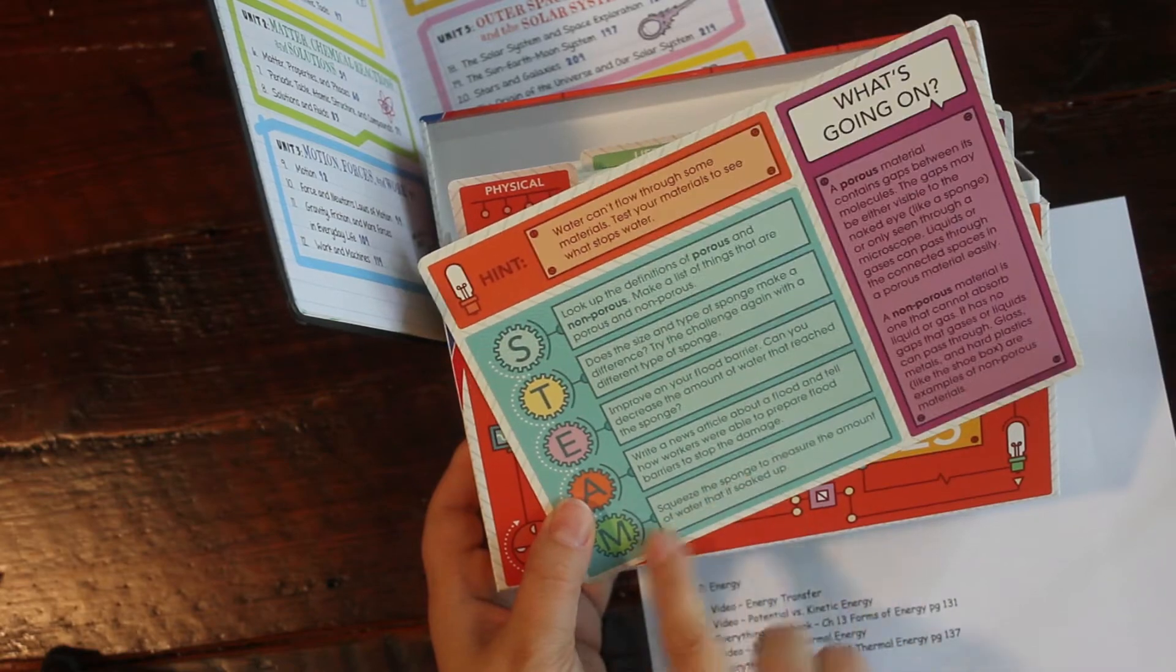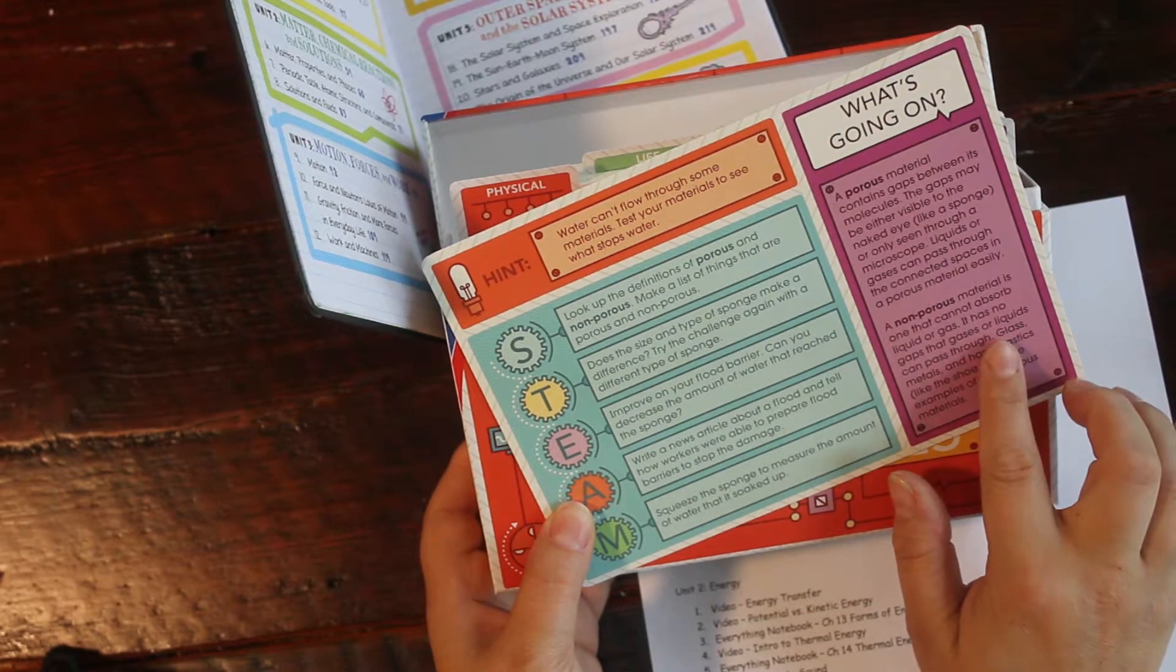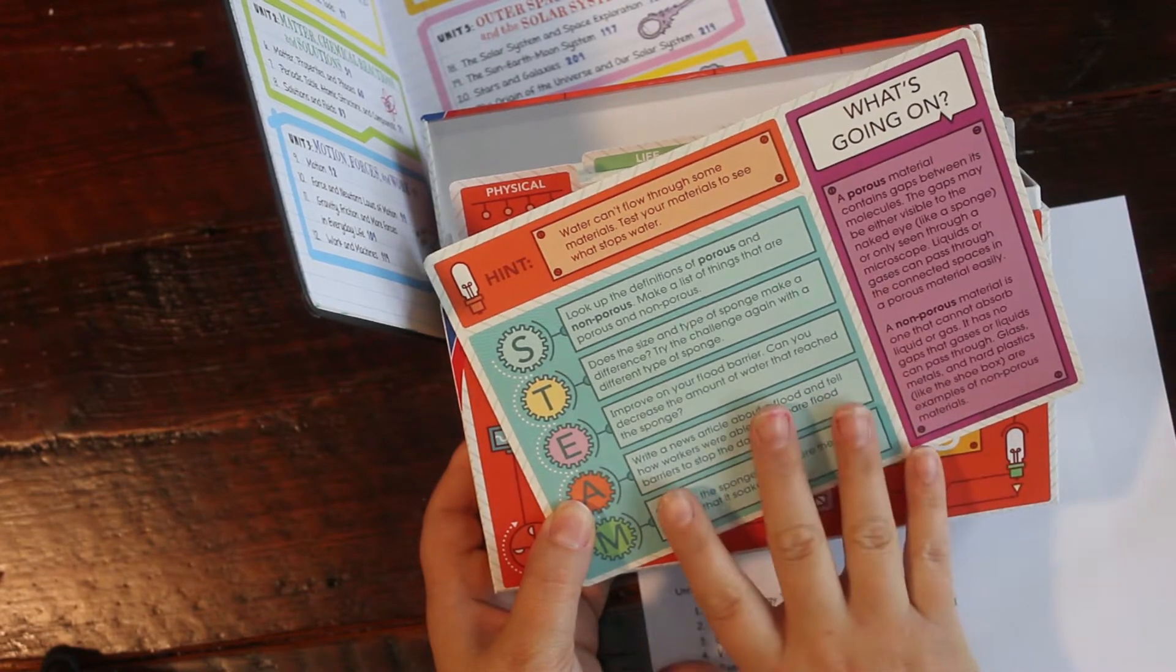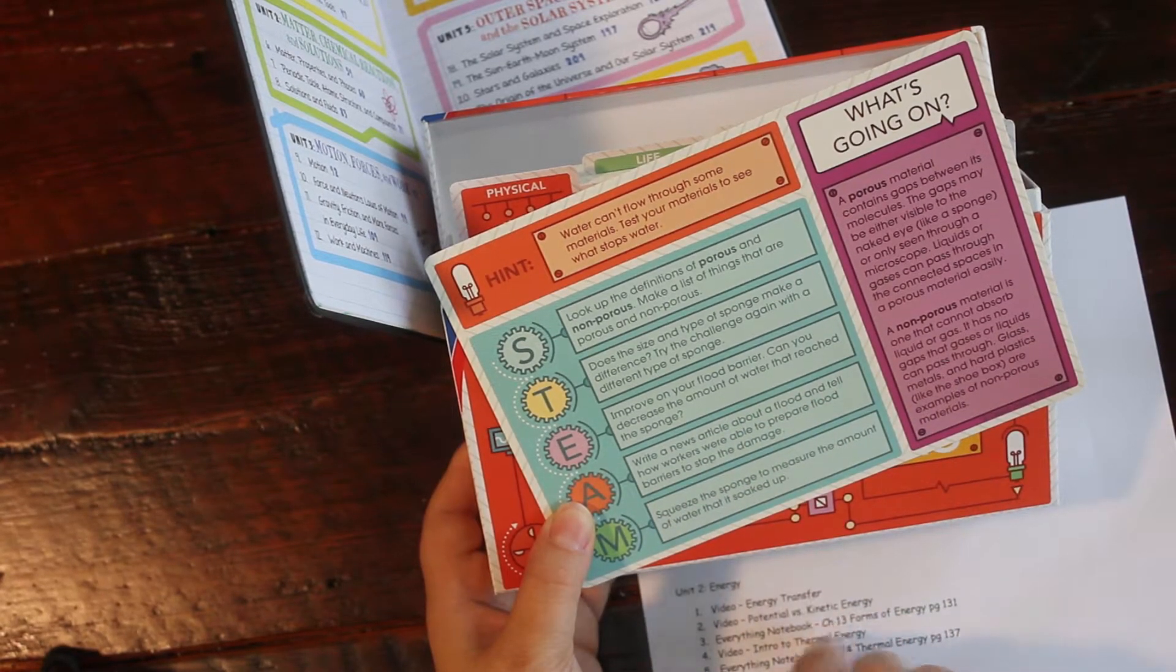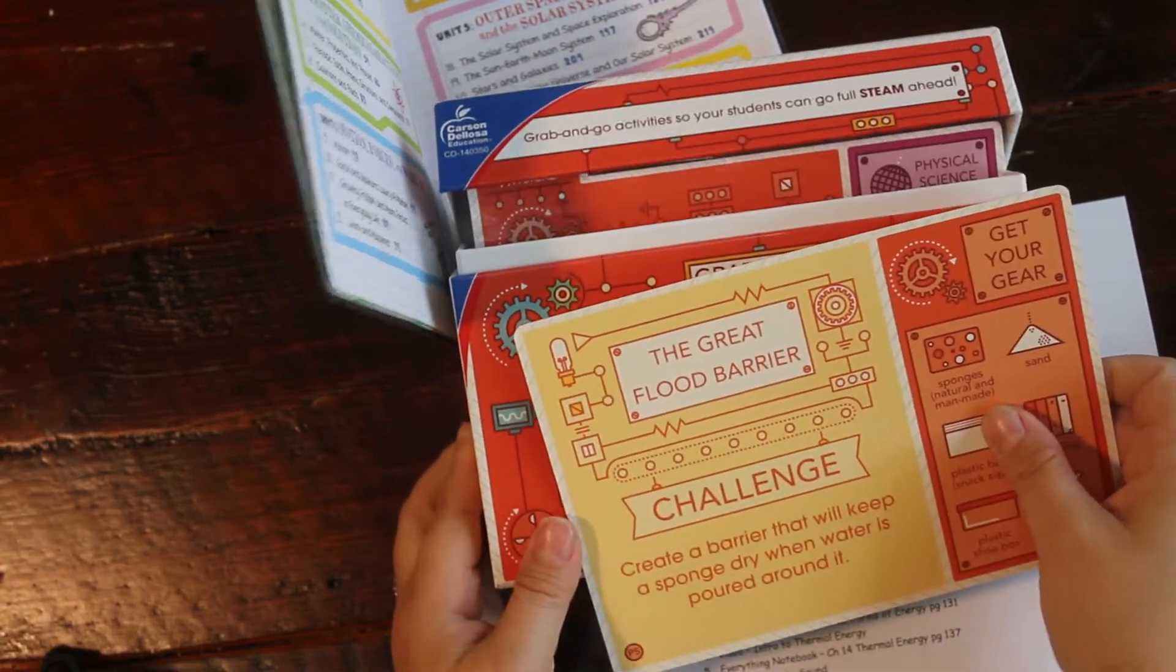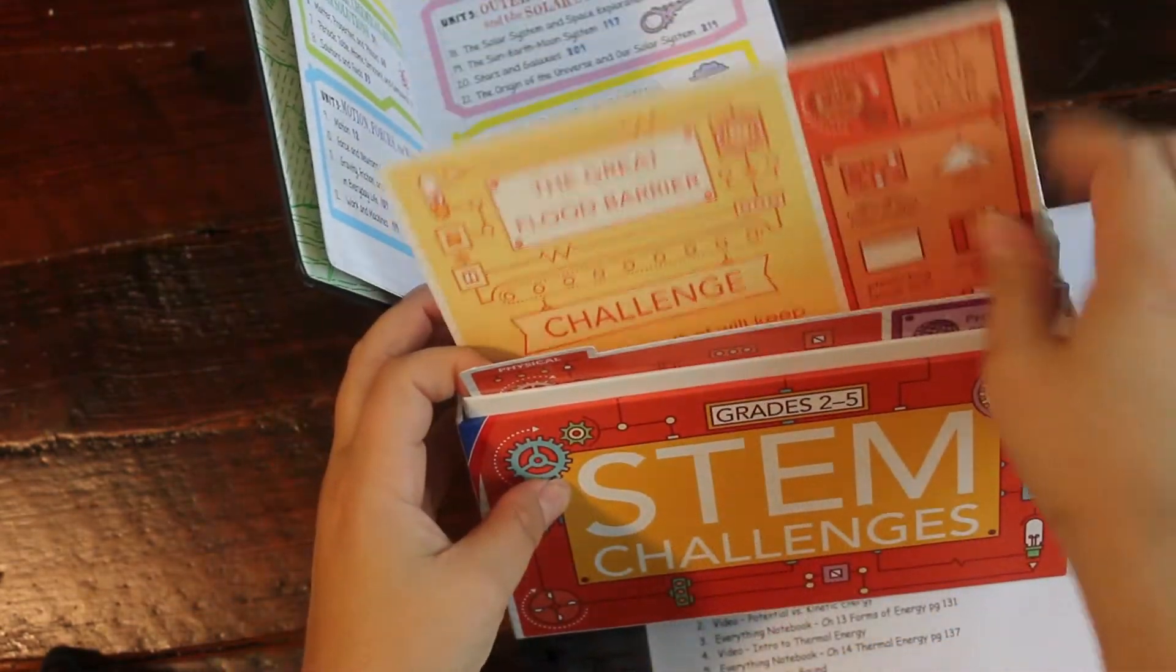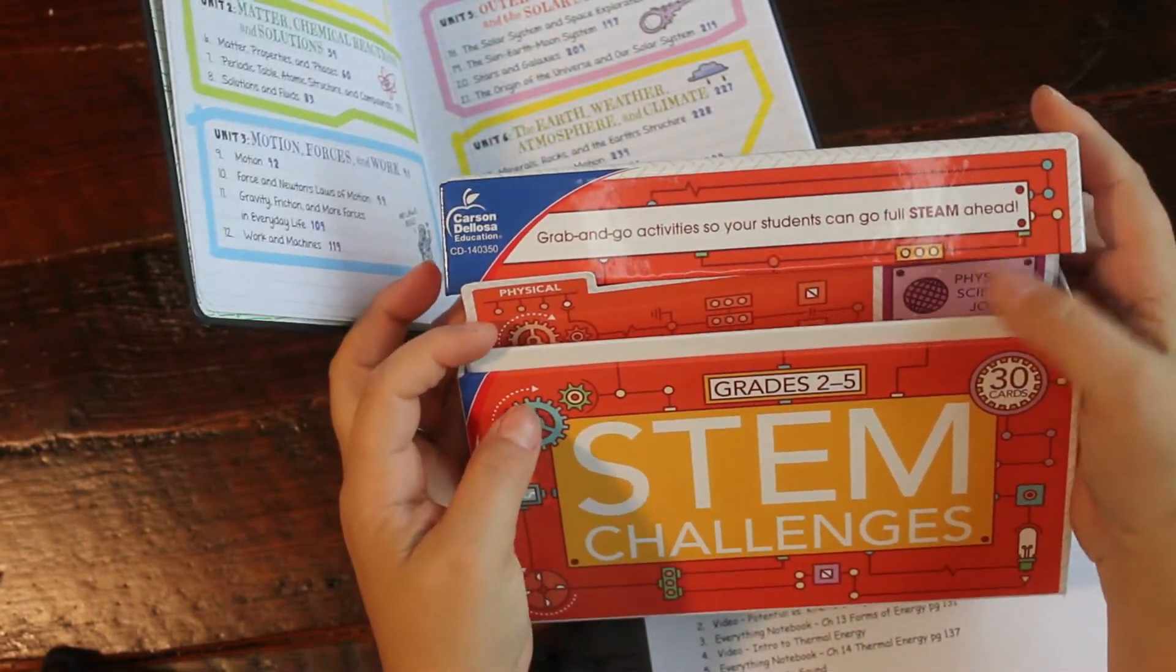And on the back, it gives some kind of like information and gives a little explanation about what's happening. So if I can find one of these cards that lines up with what we're learning about, I do have them pull these out, but they also just pull these out for fun when they're wanting something to do. That's extra pull these out and do them there. This has been a good little find.